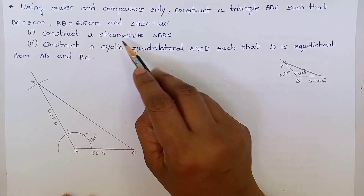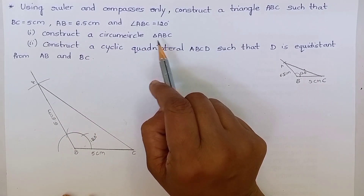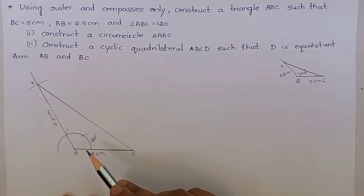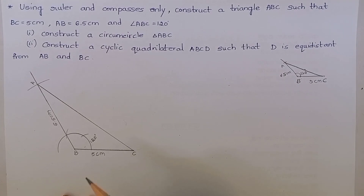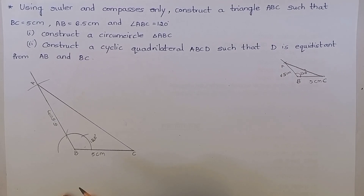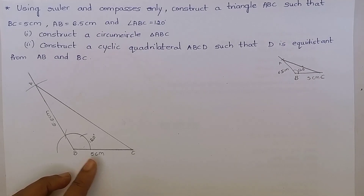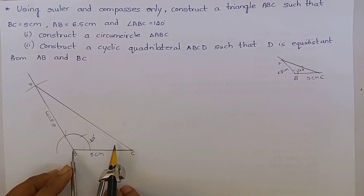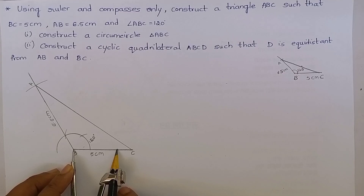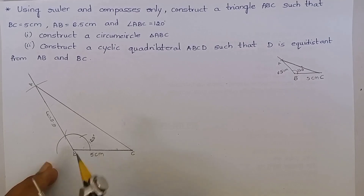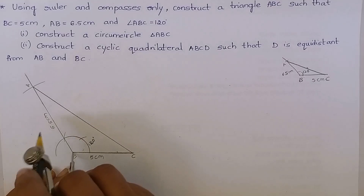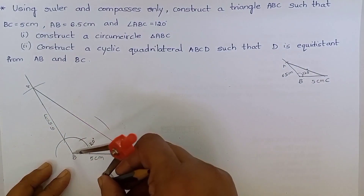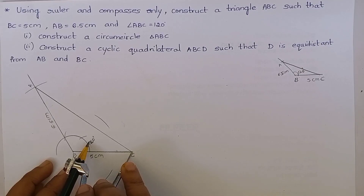Construct a circumcircle to triangle ABC. We know that to construct a circumcircle to the triangle, we have to take the perpendicular bisector of any two sides. To take the perpendicular bisector of BC, we have to take more than half of BC. Keep the compass at point B and draw an arc.